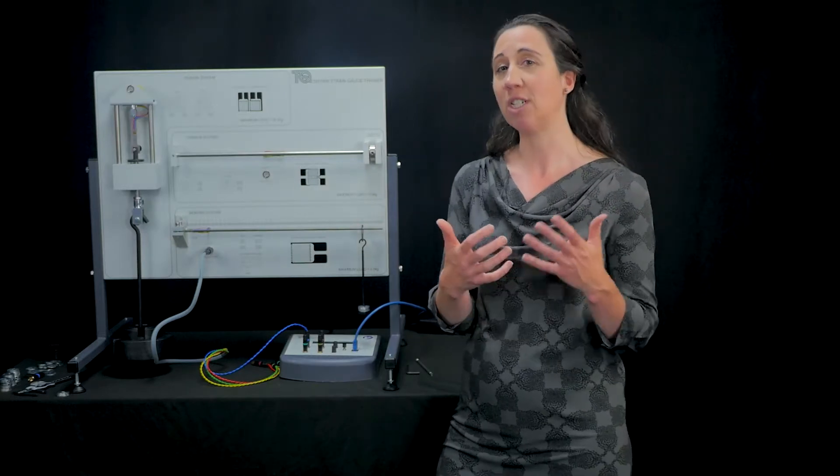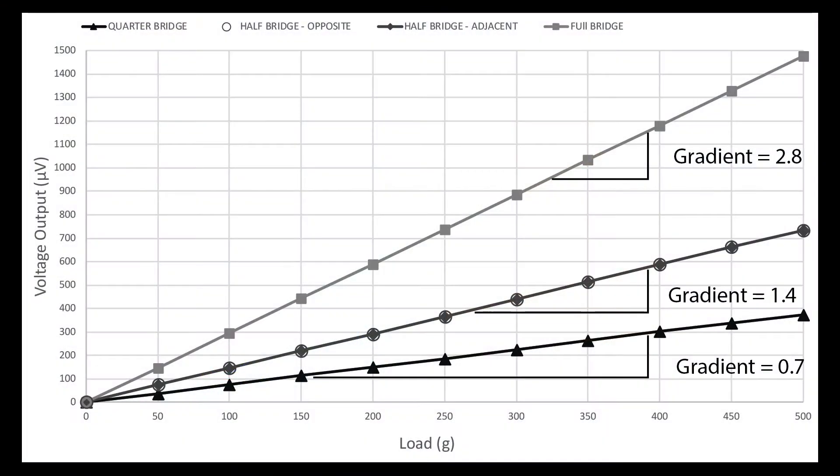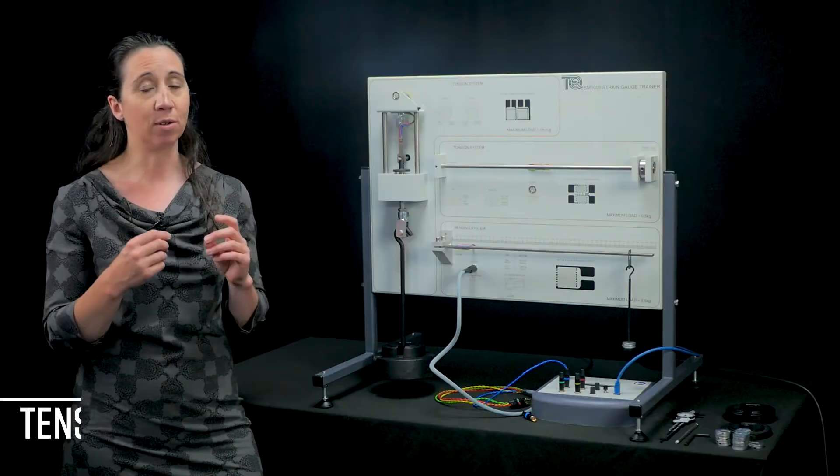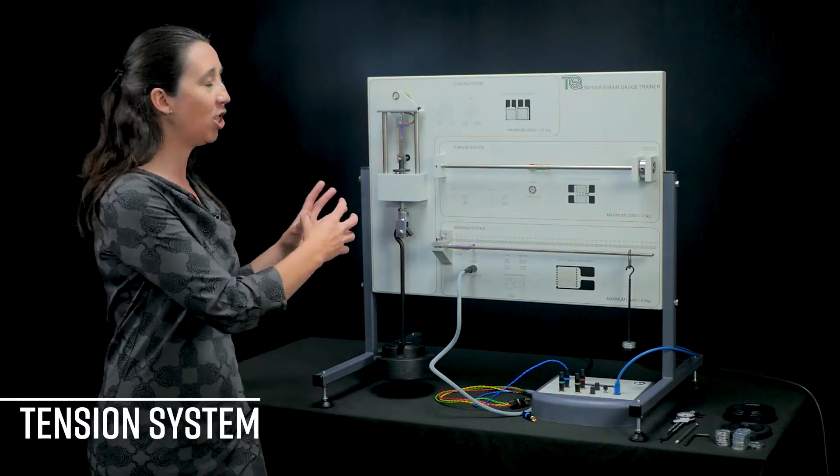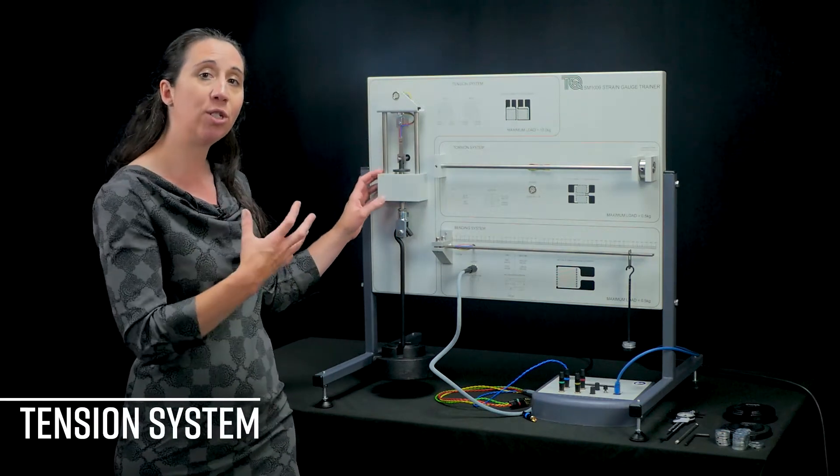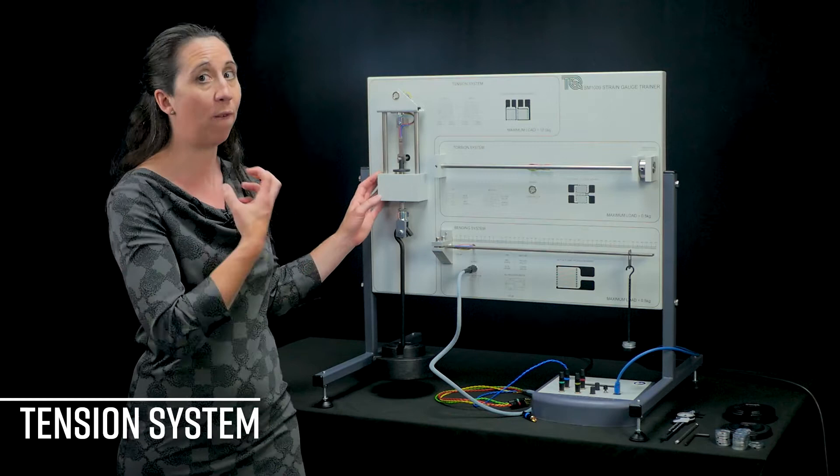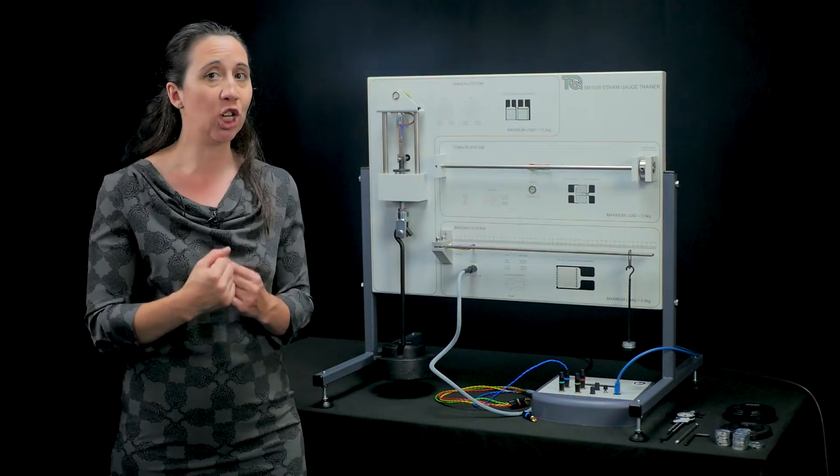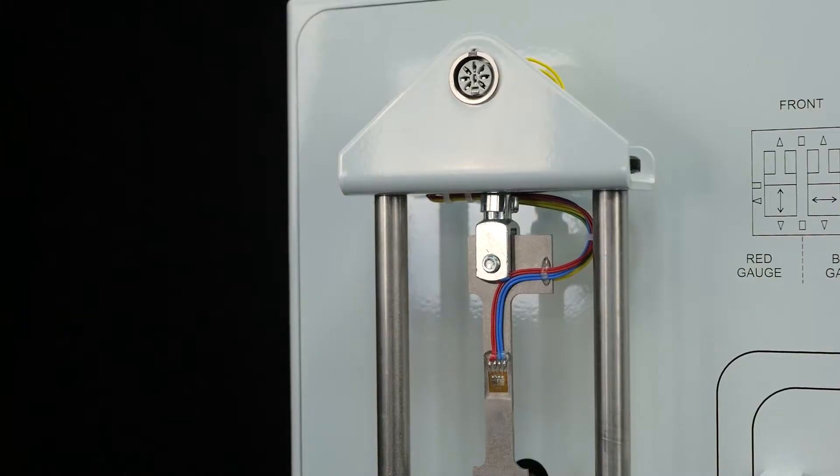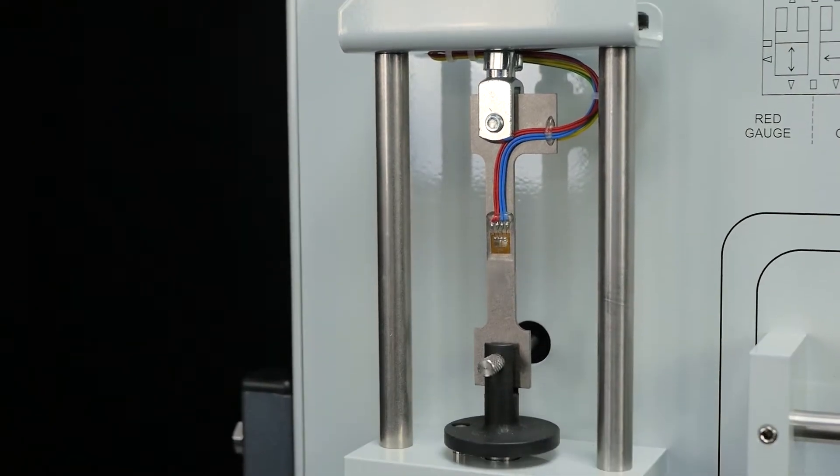Students learn how to compare the performance of quarter, half and full-bridge strain gauge connections for each structure. Now to look more closely at the tension system, which allows you to understand how much load or force a part or a complete structure can take. The tensile test specimen, which comes in steel as standard,